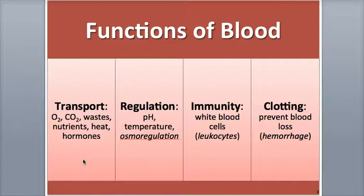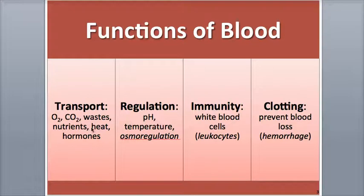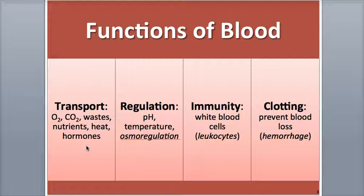Blood has four major functions: transportation, regulation, and two protective functions of immunity and clotting. Blood is able to transport the respiratory gases, like oxygen from the lungs to the body cells, and in the opposite direction, carbon dioxide from the body cells to the lungs. It also transports wastes, heat, nutrients from digestion to the body cells, and hormones from the endocrine glands to the body cells.